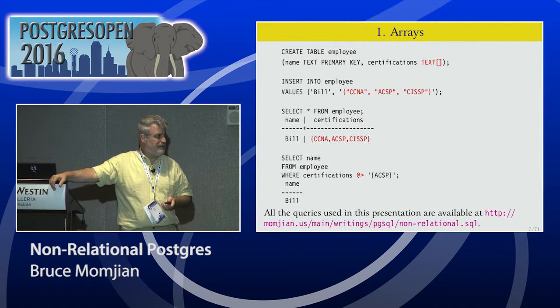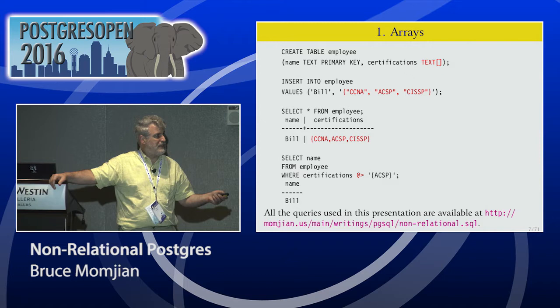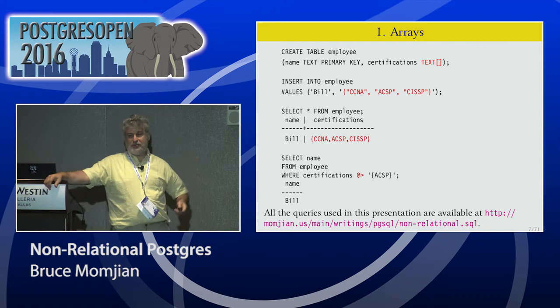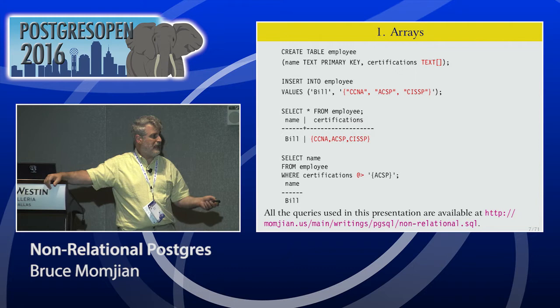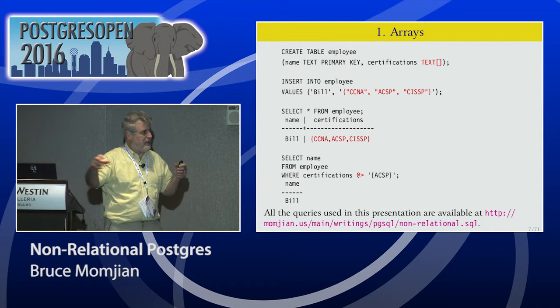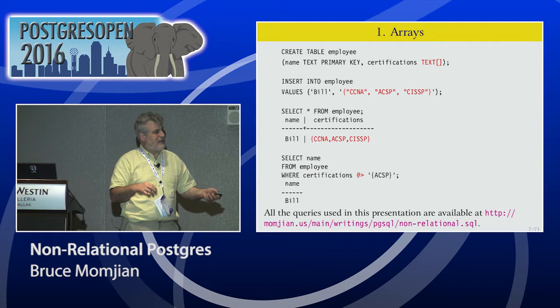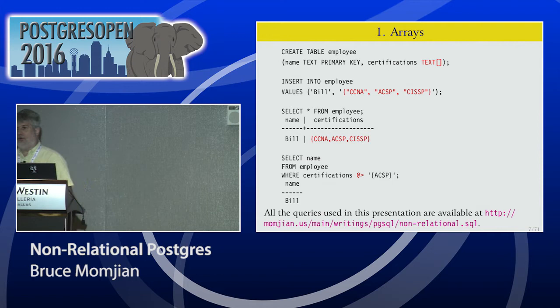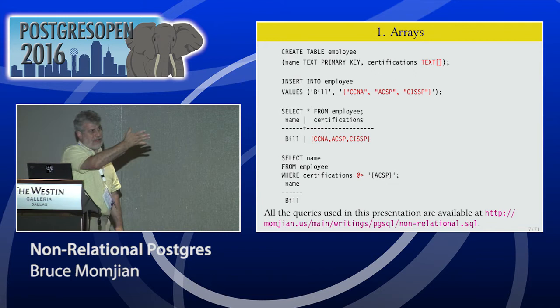If I want to insert into that array, it's very easy. I use single quotes around a string, and inside curly brackets I have my double-quoted strings — CCA, ACSP, and CISSP. Those are my three certifications for that particular employee. I can do a SELECT * and it displays them all together. I can also use the containment operator — this is where I actually want to take the certifications field and say, does this field contain this particular value? You're going to see this containment operator over and over again. It's used for a whole bunch of different data types, and it basically means 'am I inside of this other thing'.